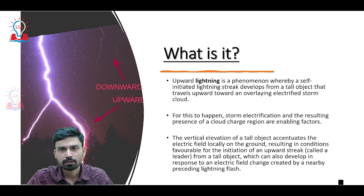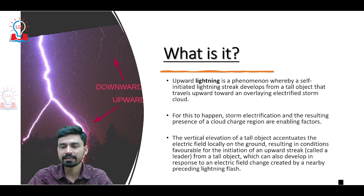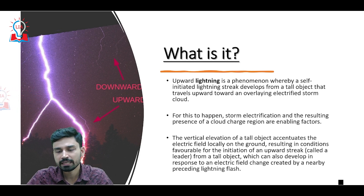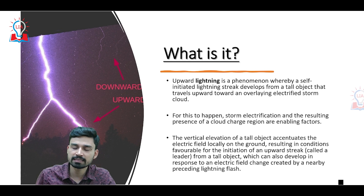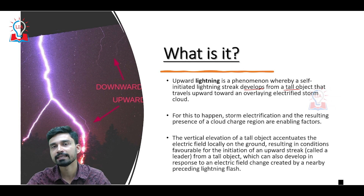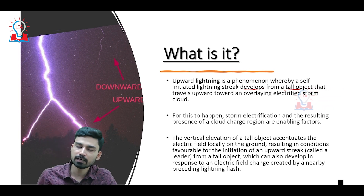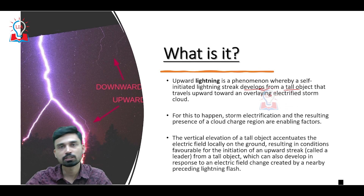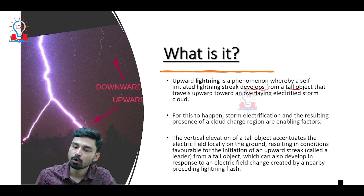Upward lightning can be simply defined as a phenomena whereby a self-initiating lightning streak develops from a tall object. These tall objects can be taller buildings, windmills, and any such kind of structure. From these tall structures, the lightning streak starts to travel in the upward direction toward an overlaying electrified storm cloud.